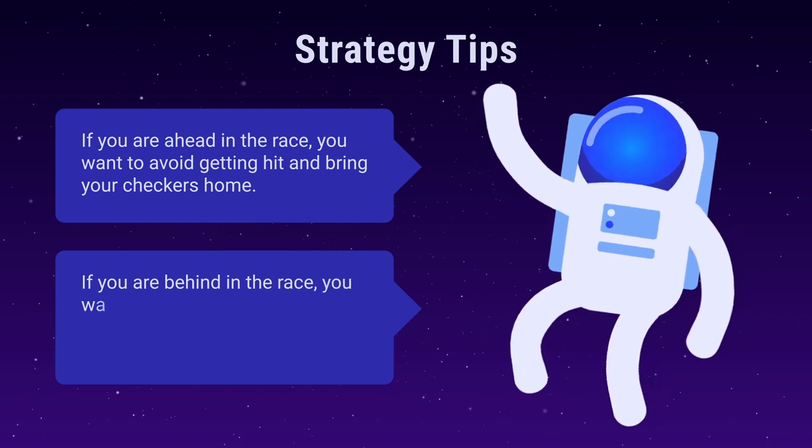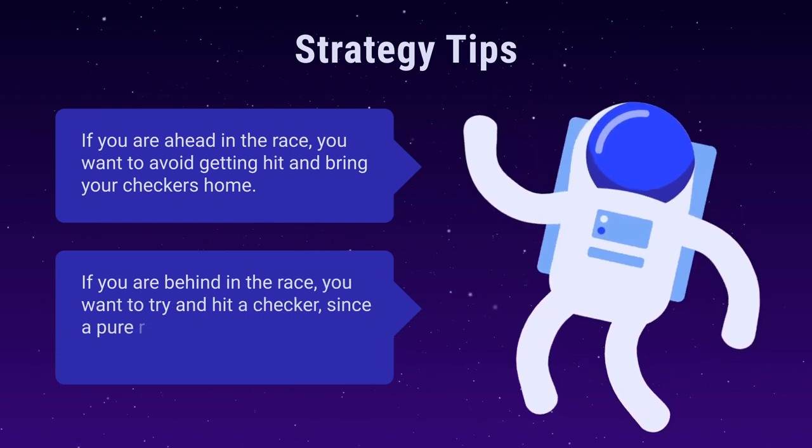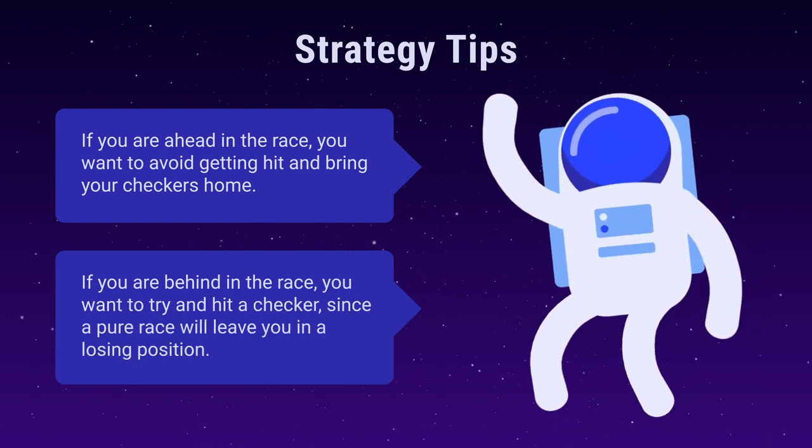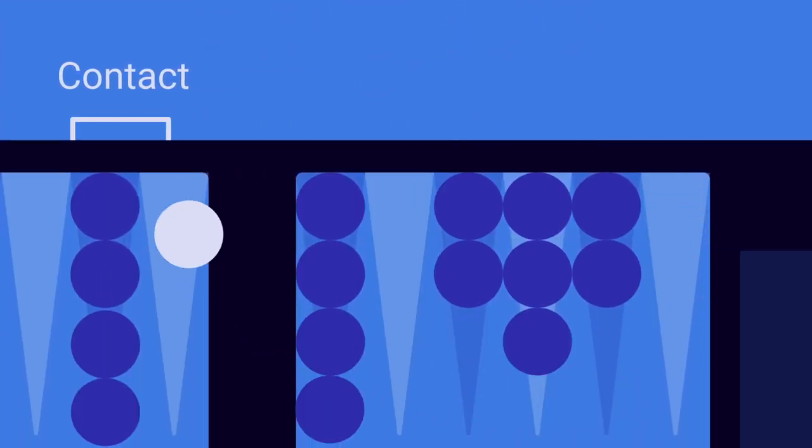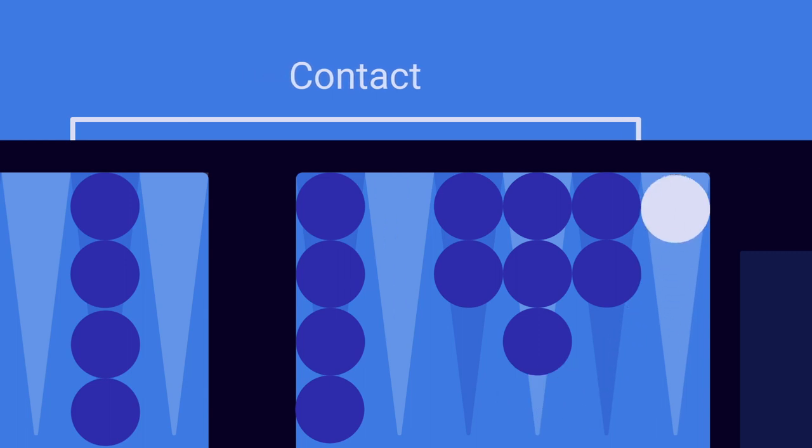If you're behind in the race, you want to try and hit a checker since the pure race will leave you in a losing position. When you're behind in the race, you have to try and hit your opponent to improve your winning chances. Running away will decrease contact with your opponent's checkers, thereby making it very difficult for you to hit him. So stay behind and wait.